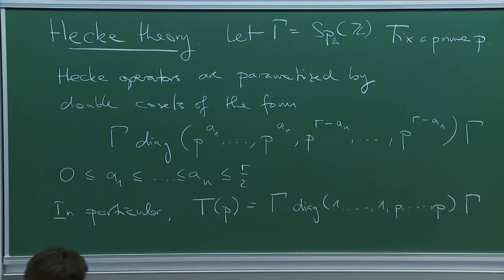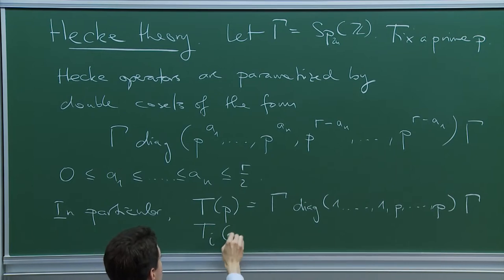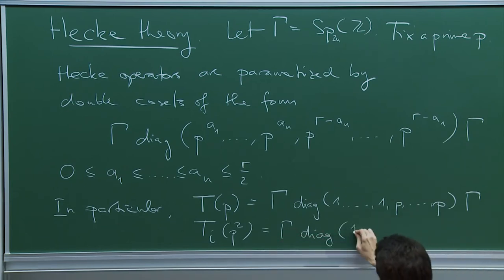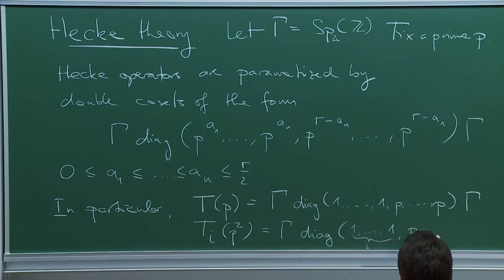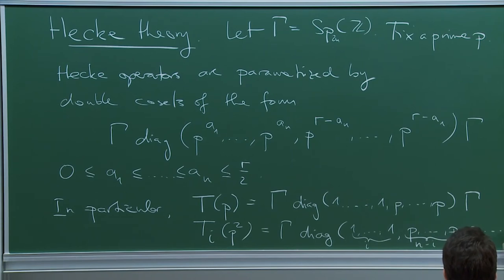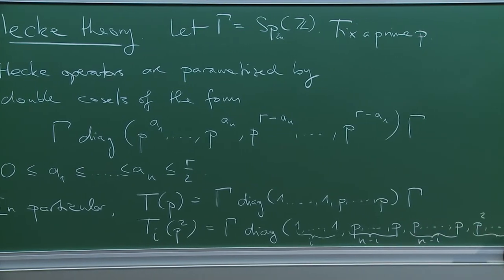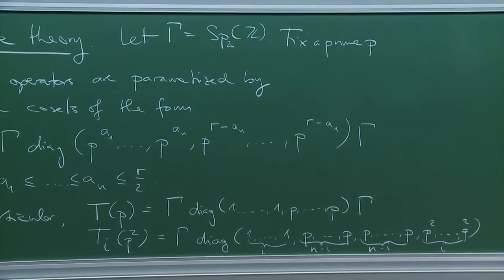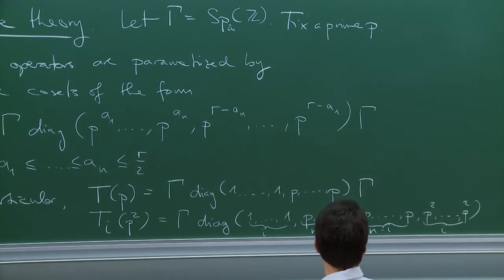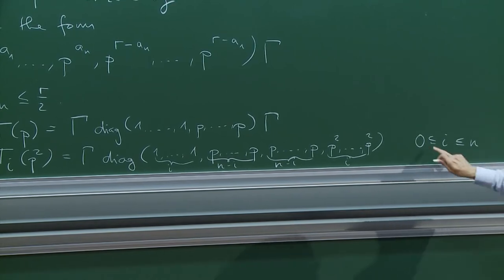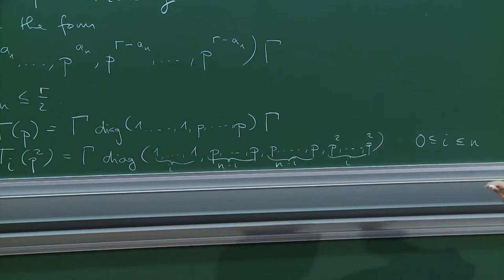There are several Hecke operators of degree 2. T_i(p²) has the following form: a diagonal matrix with i ones, then (n−i) copies of p, then (n−i) copies of p, then p². In particular, if i = 0, then this is just the all-p matrix, which is the identity.